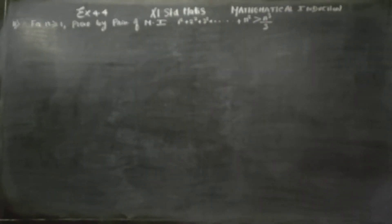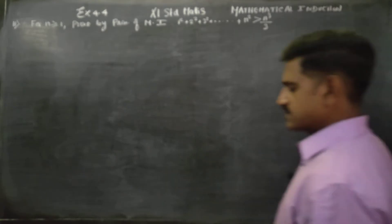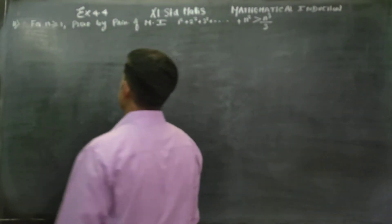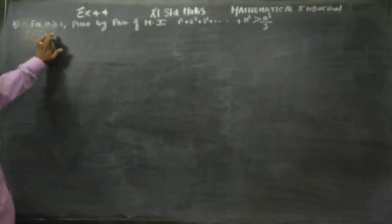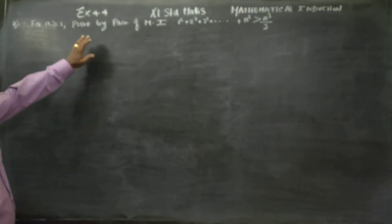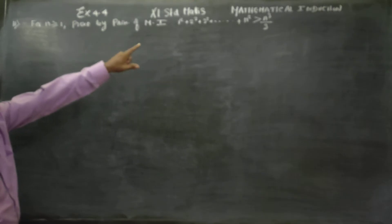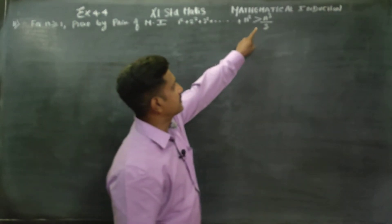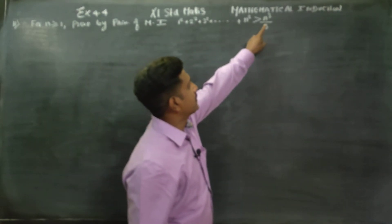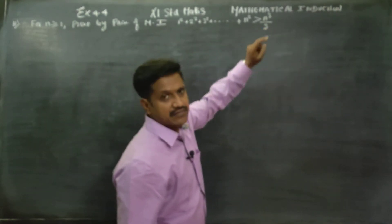Hello 11th standard students. In exercise number 4.4, sum number 11: for n greater than or equal to 1, prove by principle of mathematical induction that 1 squared plus 2 squared plus 3 squared plus dot dot dot plus n squared is greater than n cubed by 3.